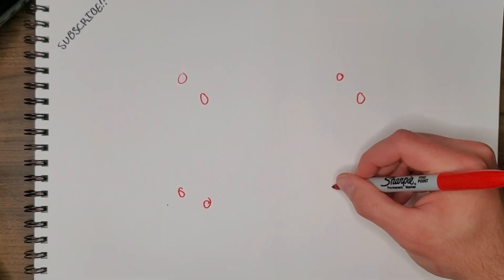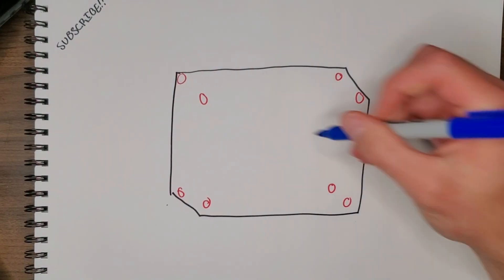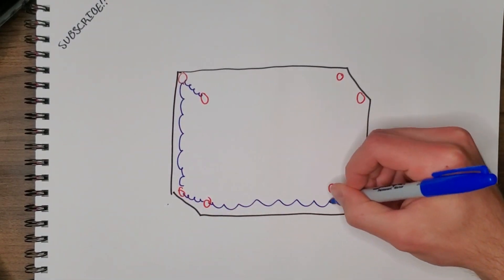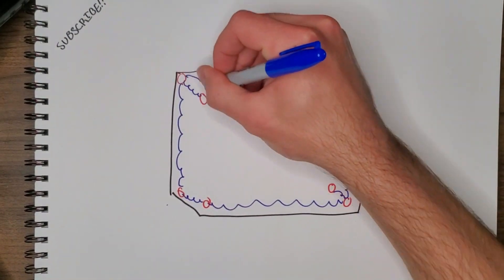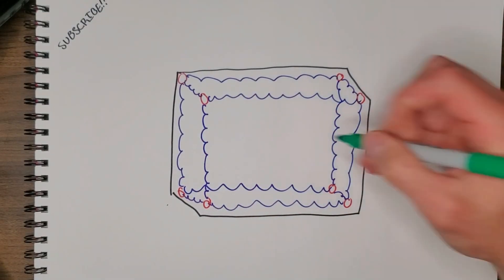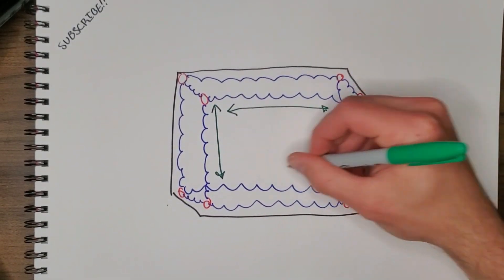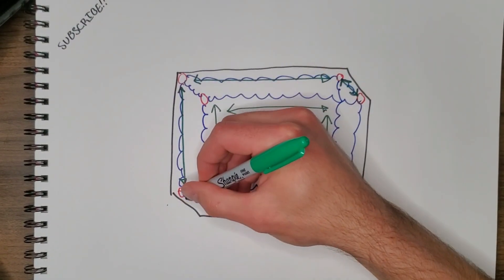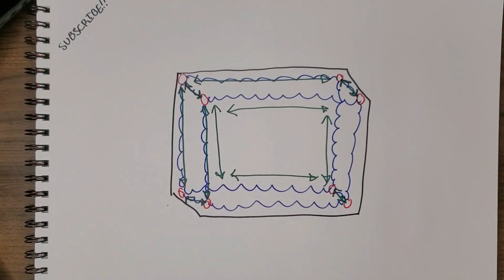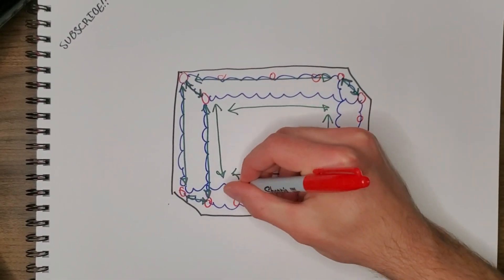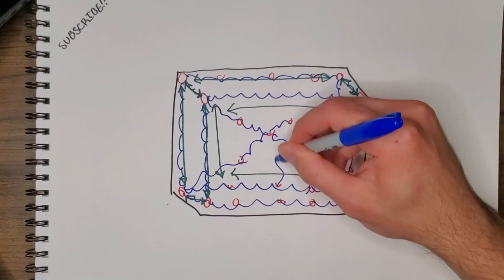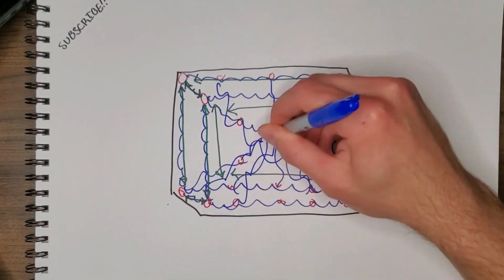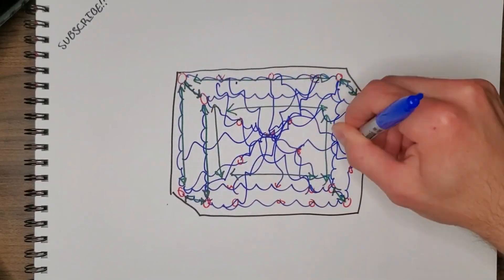A soft body is simply a network of connected particles wrapped in a mesh. Each particle is connected to a few adjacent particles by springs that push and pull based on how much you want them to. This is also why when you change the triangle count, the simulation changes drastically.